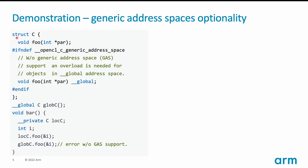We are adding a new type class C, and we are going to create two objects — one in global address space and one in private address space of this class C. Then we are going to call member function foo with both objects. If generic address space is supported, just having this first overload of foo will be sufficient, because it will default to generic address space, and both global and private address space are convertible to generic. No problem here.